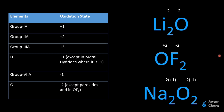Going through these examples, we observe that oxygen in the first example (Li2O) has an oxidation state of negative 2, oxygen in the second example (OF2) has an oxidation state of positive 2, and oxygen in the last example has an oxidation state of negative 1. So oxygen can exist in negative 2 and a number of different oxidation states.